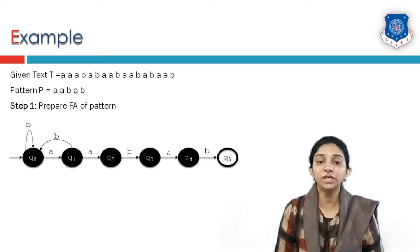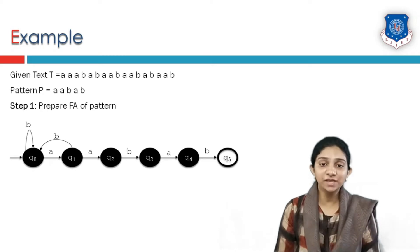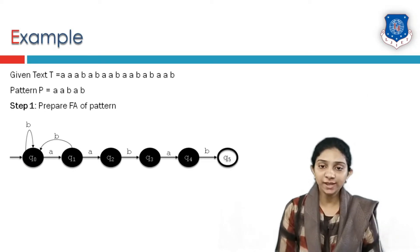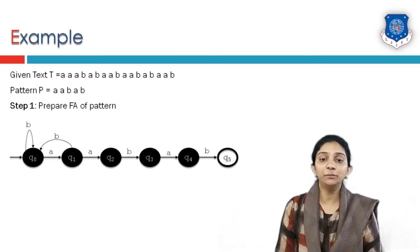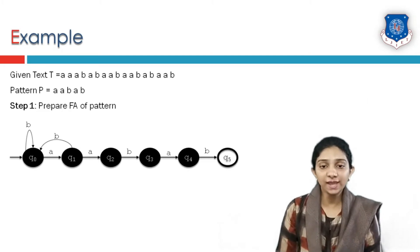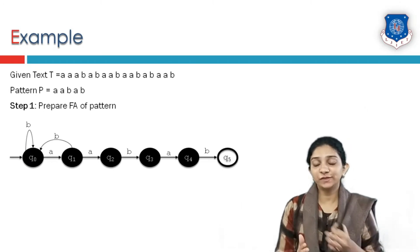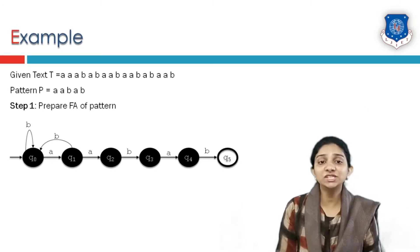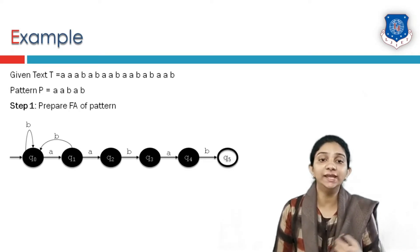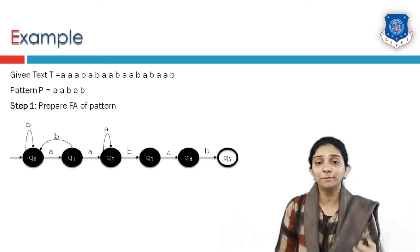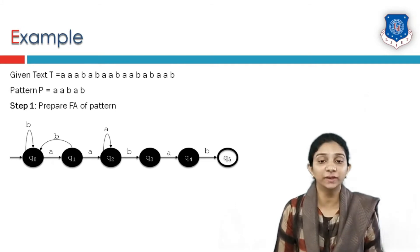Now take q2. The transition from state q2 on input symbol B leads to q3. But what happens if the input is symbol A at state q2? If there is a series of A's, it is still matching because pattern P has two leading A's. So if there are multiple A's, we stay in state q2, waiting for B to occur so the pattern can match.